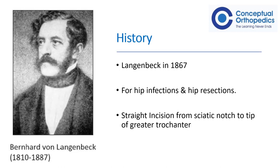Von Langenbeck, way back in 1867, described a surgical approach to the posterior part of the hip joint using a straight incision from the sciatic notch to the tip of the greater trochanter. He had made all these recordings in his book which was not published. He had used this approach basically for treatment of hip infections as well as hip resections.